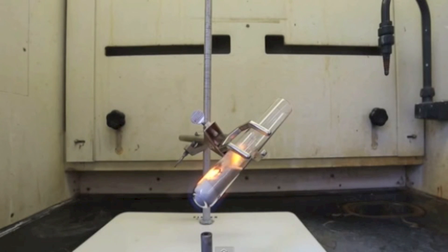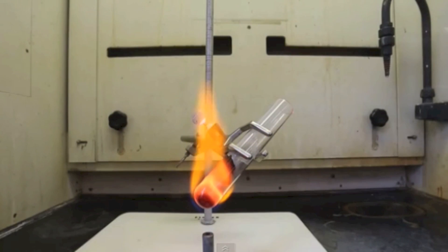The first reaction that occurs is that the magnesium combusts to form magnesium oxide, and in doing so, it strips off the oxygen from the silicon atoms to make elemental silicon.